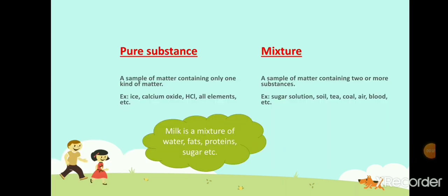A sample of matter containing only one kind of matter is called a pure substance. For example, ice, calcium oxide, HCl, and all the elements — they are all pure substances because they contain only one kind of matter in them.